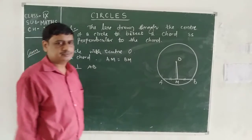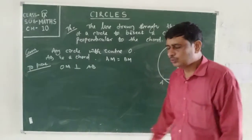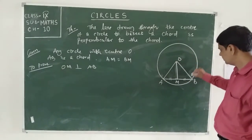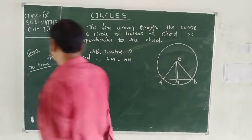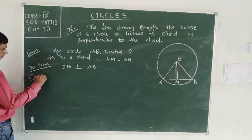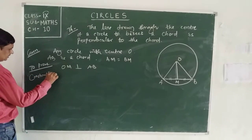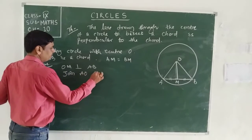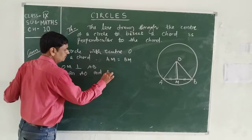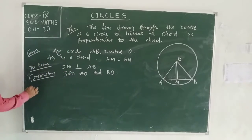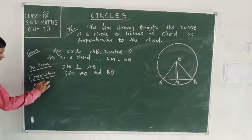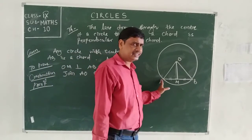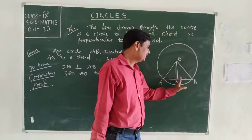How do we prove it? We need to join OA and OB. Construction: join OA and OB. We then consider triangles OAM and OBM to prove the required result.